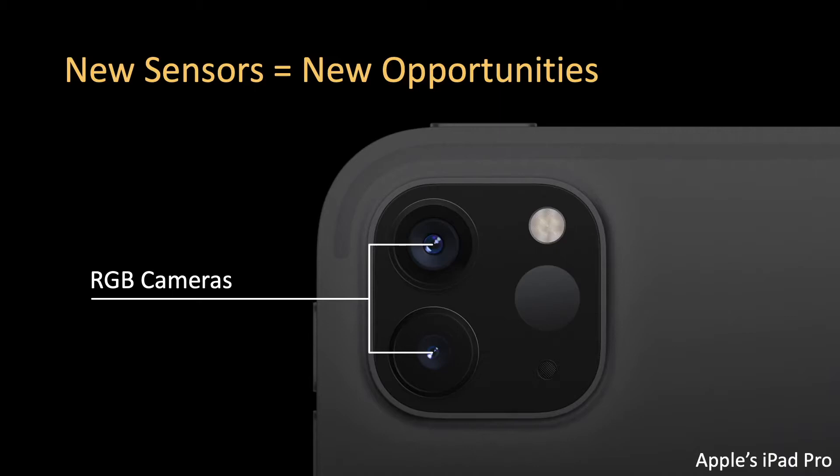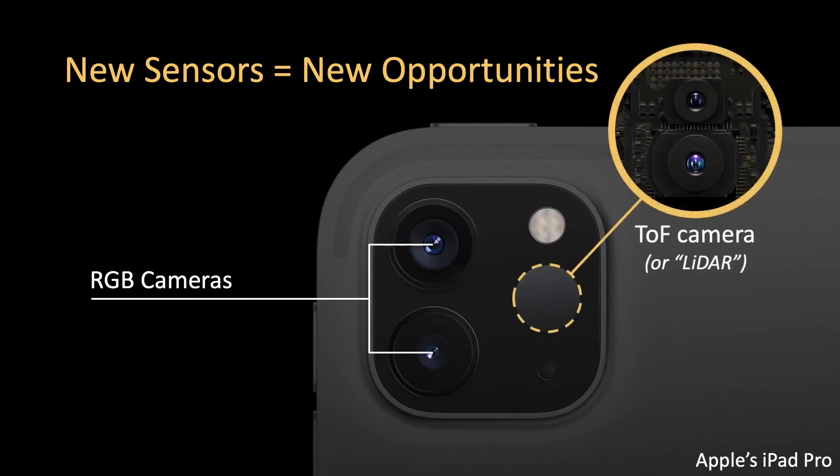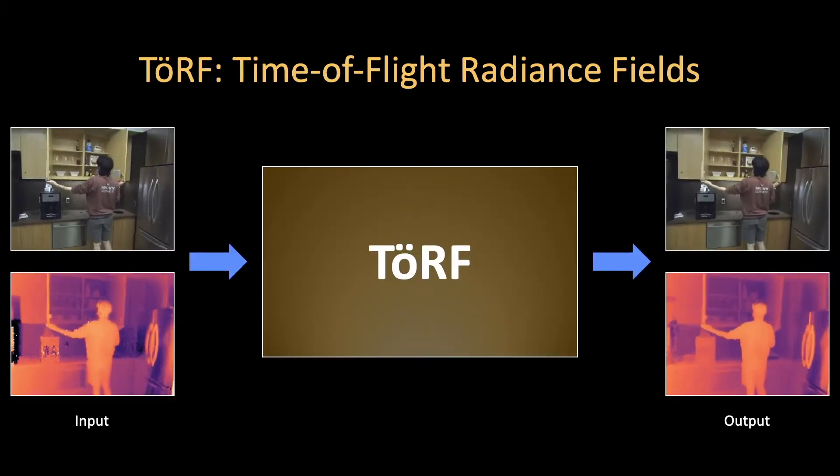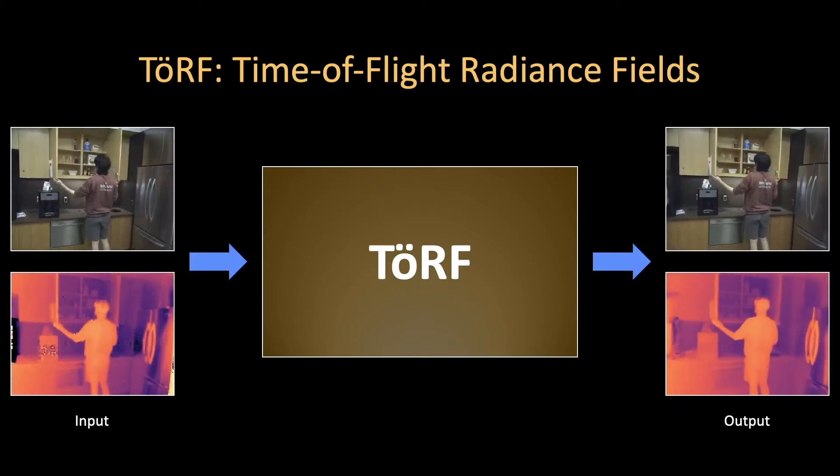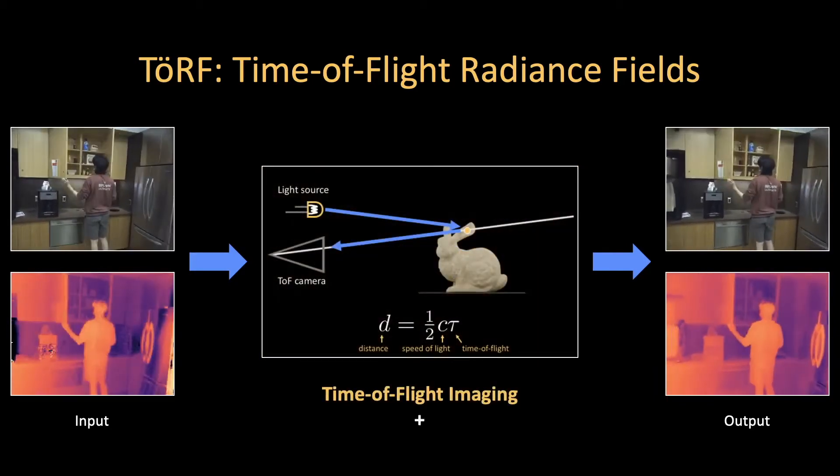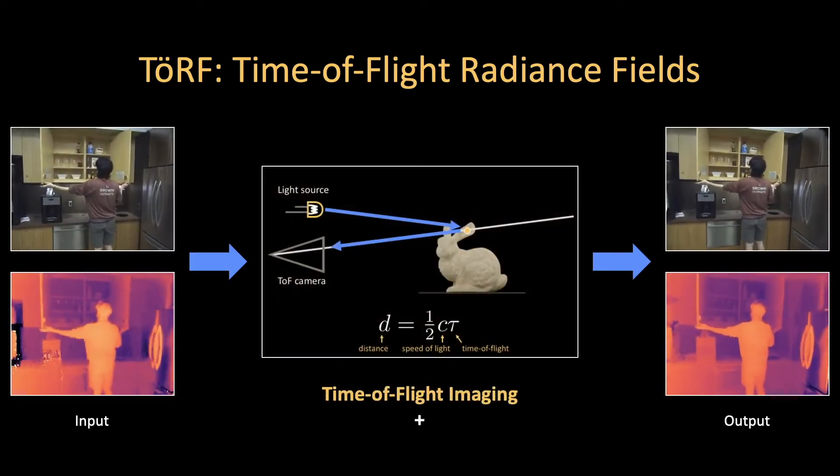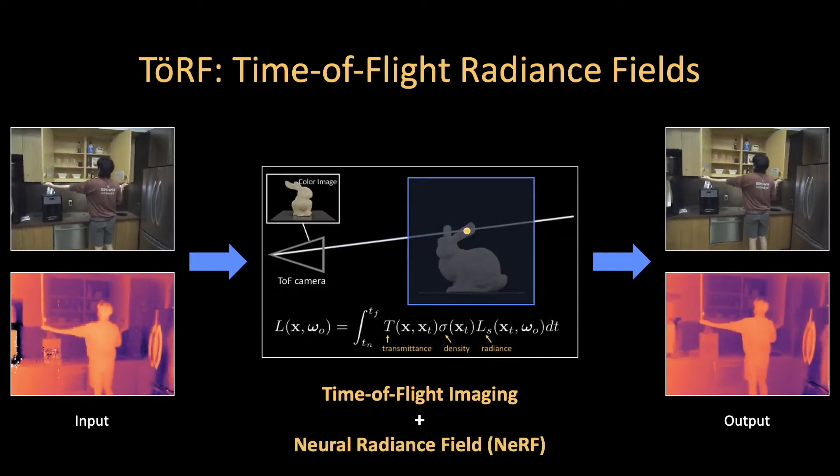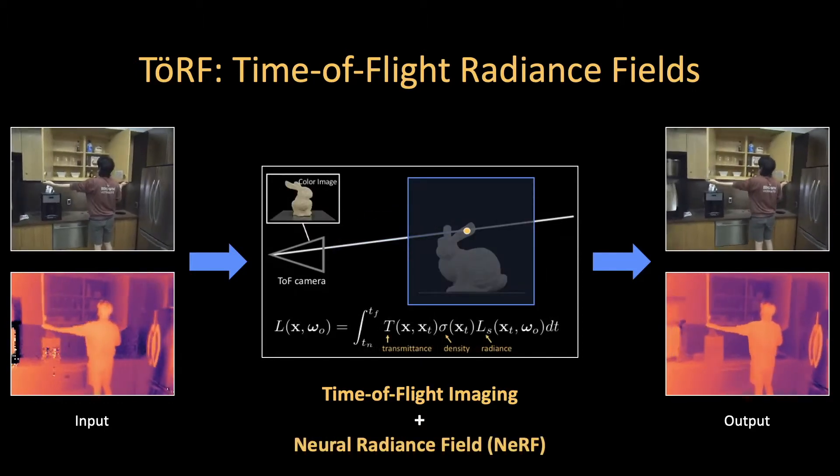Let's take advantage of depth sensors already available on mobile devices, including time-of-flight cameras. This information is typically ignored by recent novel view synthesis methods, in part because this depth can be unreliable. Turf gets around this issue by accurately modeling the way time-of-flight cameras capture depth information, and then uses this information to solve the dynamic novel view synthesis problem.